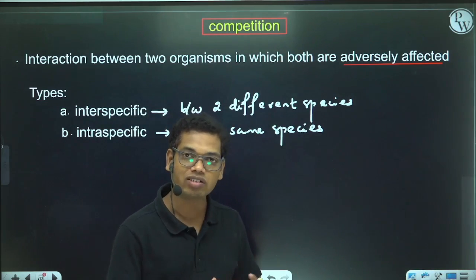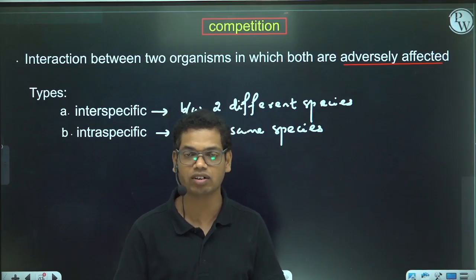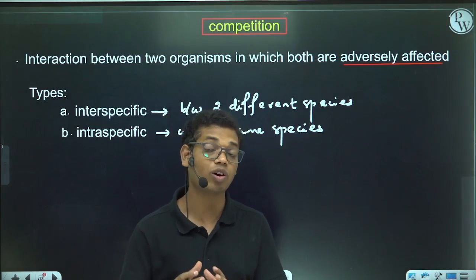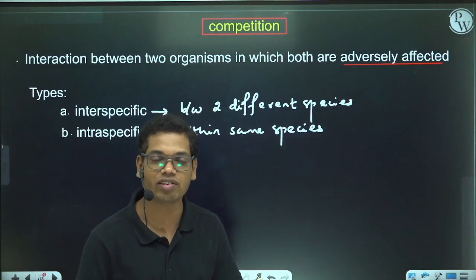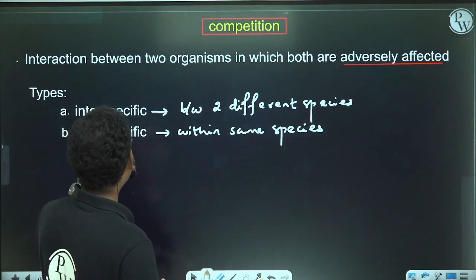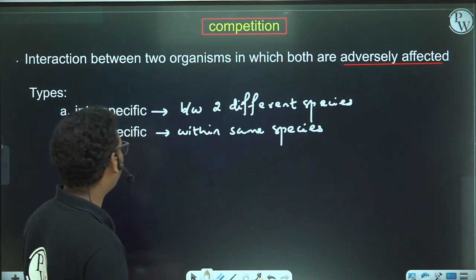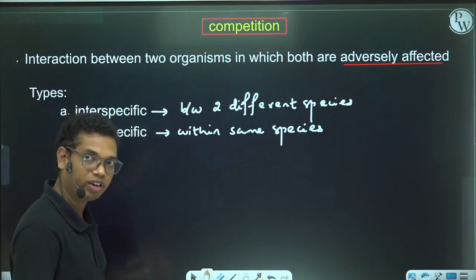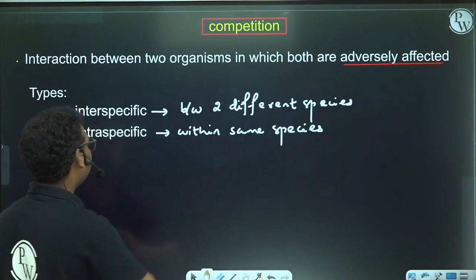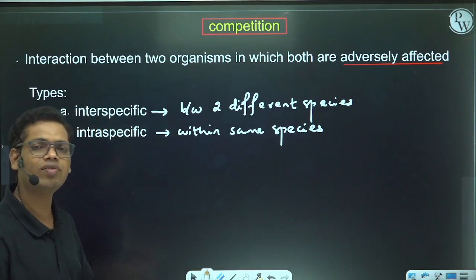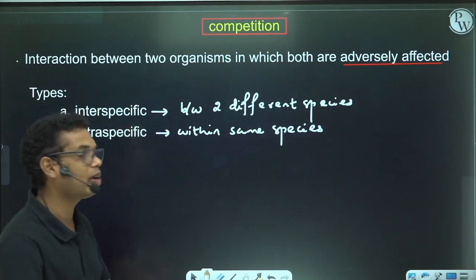The two organisms which participate in this interaction may belong to the same species or may belong to two different species. Accordingly, we can classify competition into intraspecific and interspecific competition. If both competing organisms belong to the same species, that is intraspecific competition. If they belong to two different species, that is called interspecific competition.